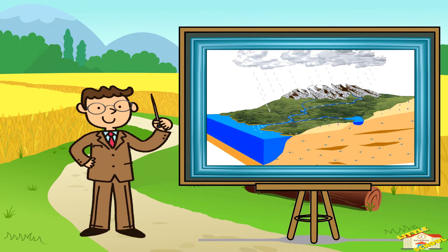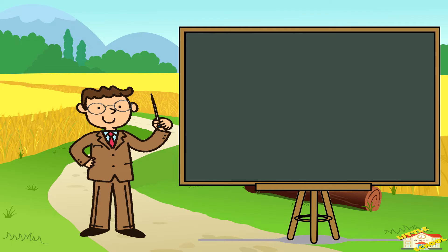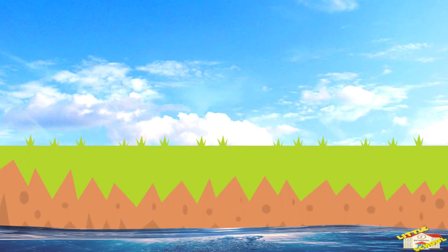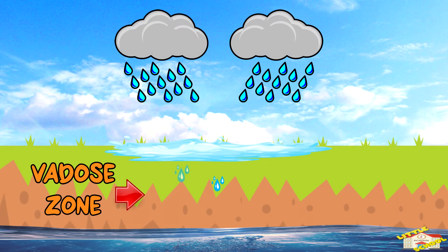The vadose zone: The region where water moves through the soil before reaching the groundwater is called the vadose zone.